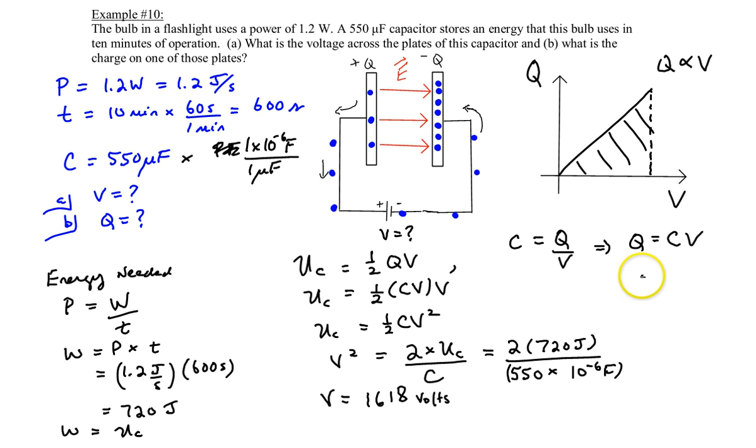For part B you can find out the charge either way. I suppose you could use this formula again, or since you now know the voltage and the capacitance, the charge is equal to that capacitance times the voltage. So the capacitance is 550 times 10 to the power of negative 6 and the voltage was 1618 volts. That gives you 0.89 coulombs.